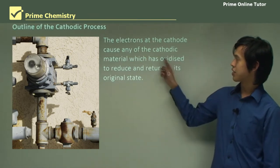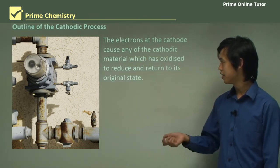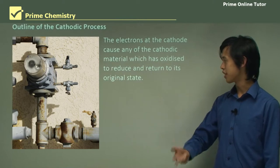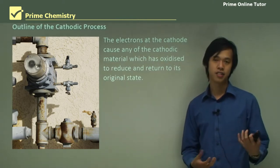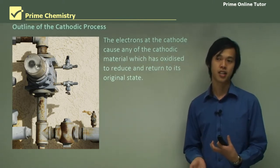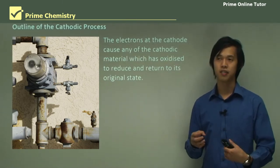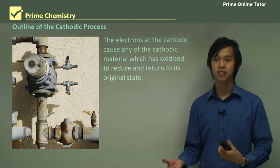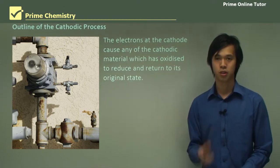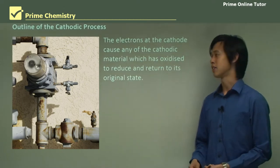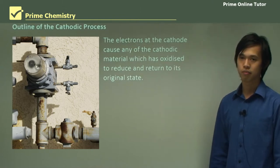The electrons at the cathode cause any of the cathodic material that is oxidized to reduce and return to its original state. So if some of the iron has already oxidized, the presence of those electrons will cause those Fe ions to reduce back to iron solid. It can actually convert them back into solid metal.